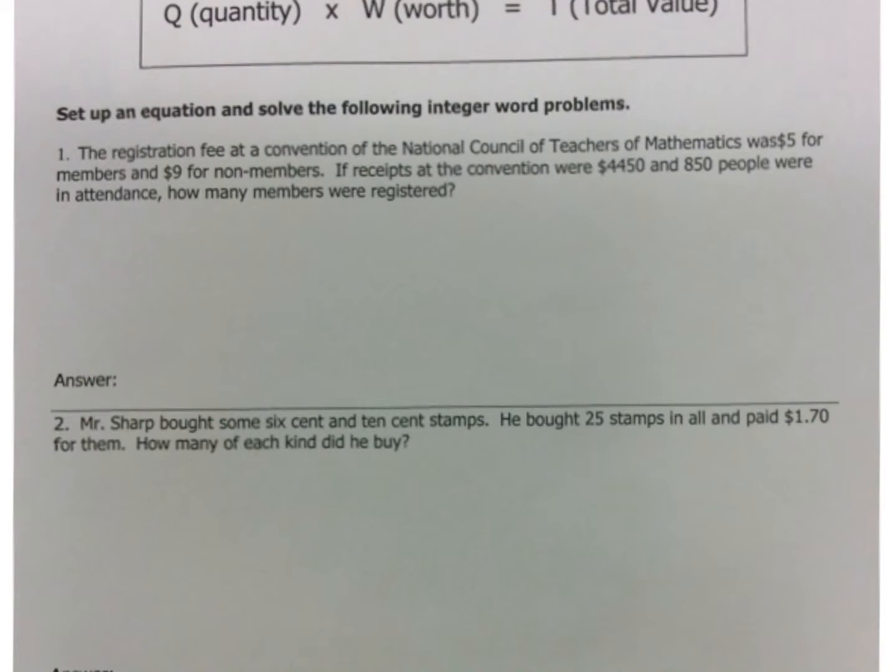The registration fee at the Convention of National Counselors of Teachers of Mathematics was $5 for members and $9 for non-members. If the receipts at the Convention were $4,450 and there were 850 people in attendance, how many members were registered? Now, the next time we read this problem, we go through sentence by sentence picking out the relevant information.